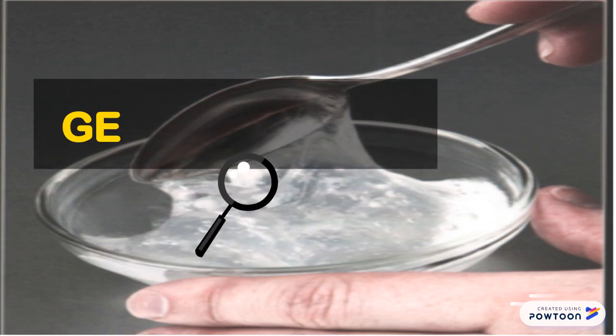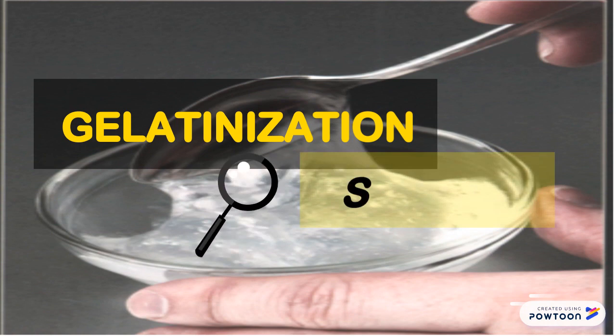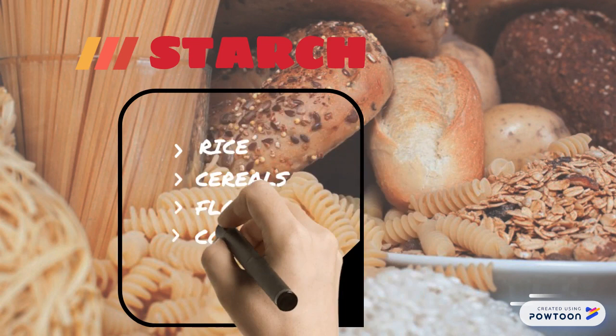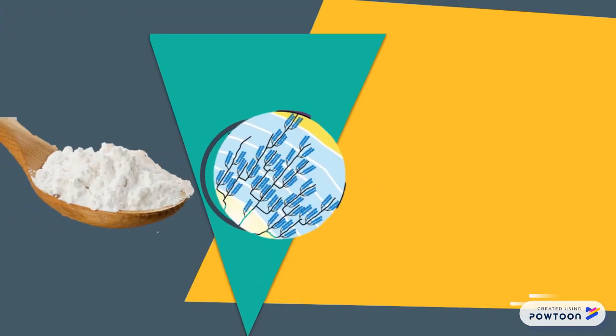Now, we will be talking about gelatinization. The main food component involved in gelatinization is starch. Starch is a complex carbohydrate and it is commonly found in rice, cereals, flour, cornstarch, and bread.